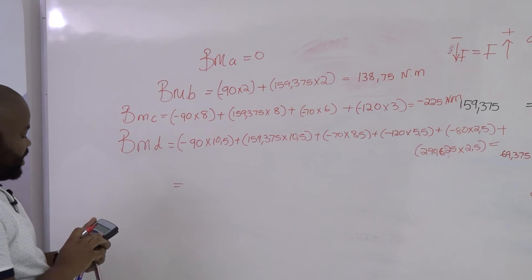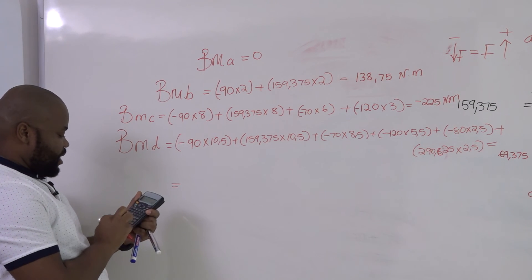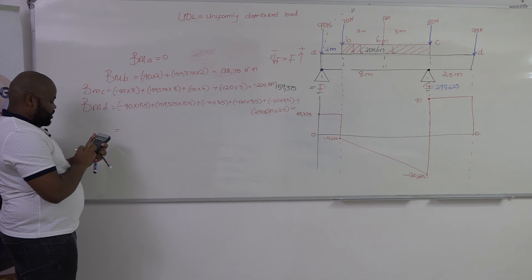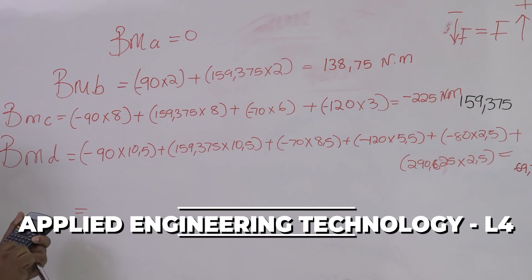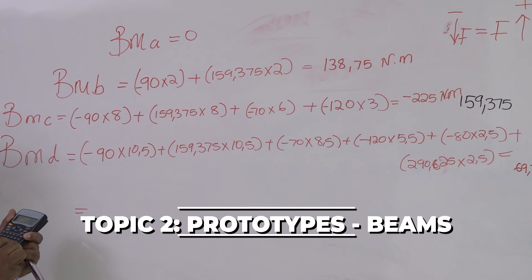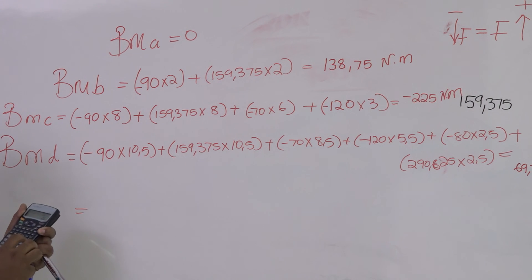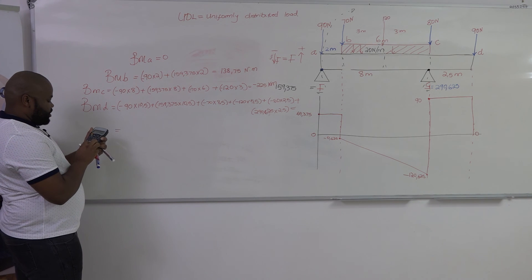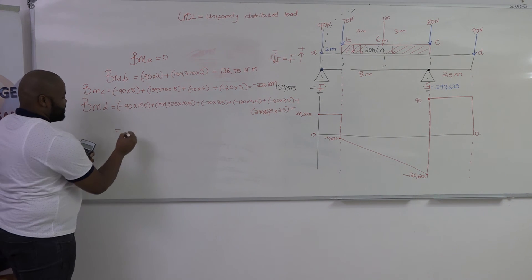We calculate: (minus 90 × 10.5) + (159.375 × 10.5) + (minus 70 × 8.5) + (minus 120 × 5.5) + (minus 80 × 2.5) + (290.625 × 2.5) equals zero, confirming that bending moments at D is exactly zero.